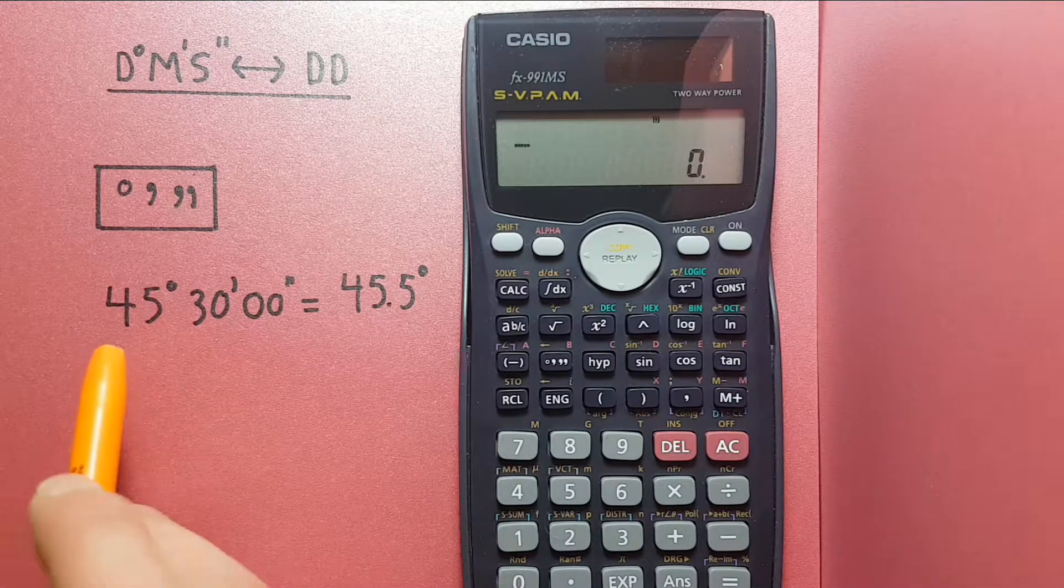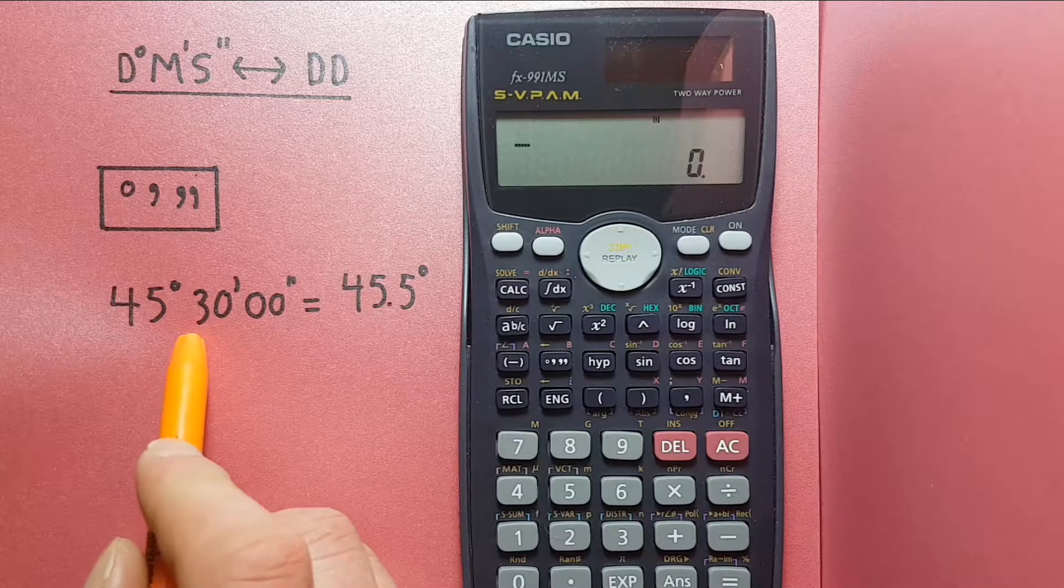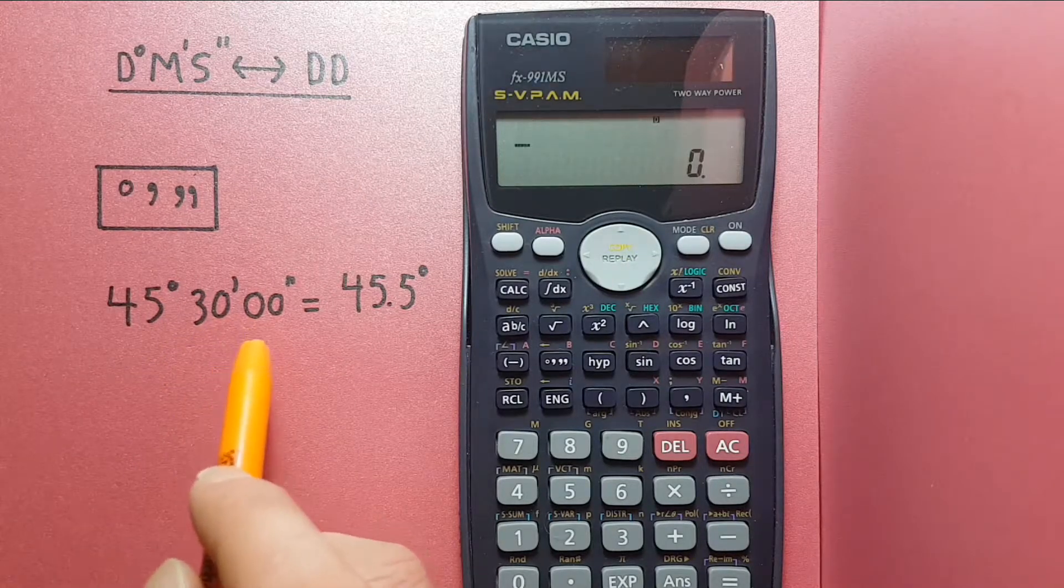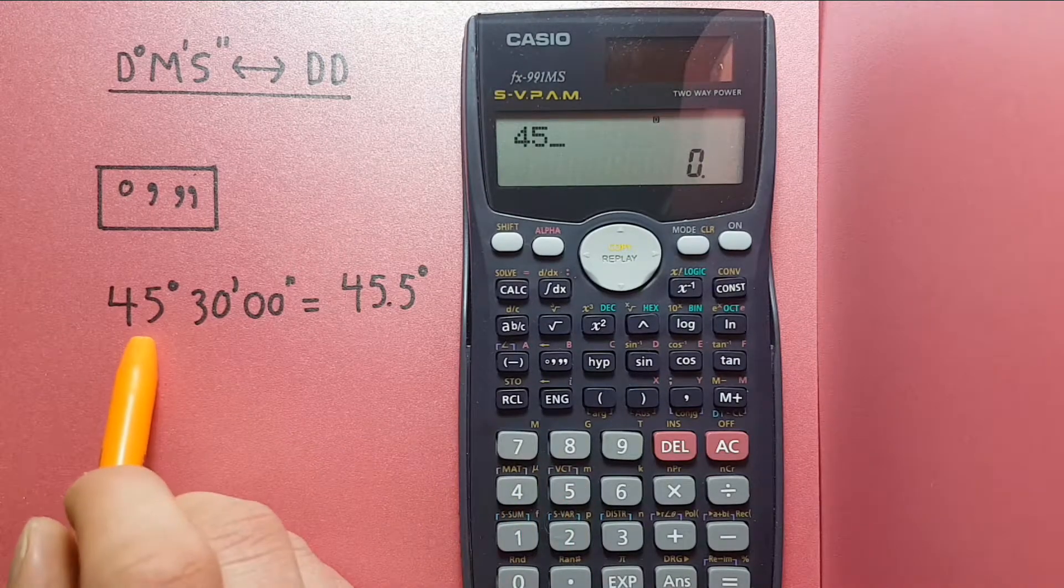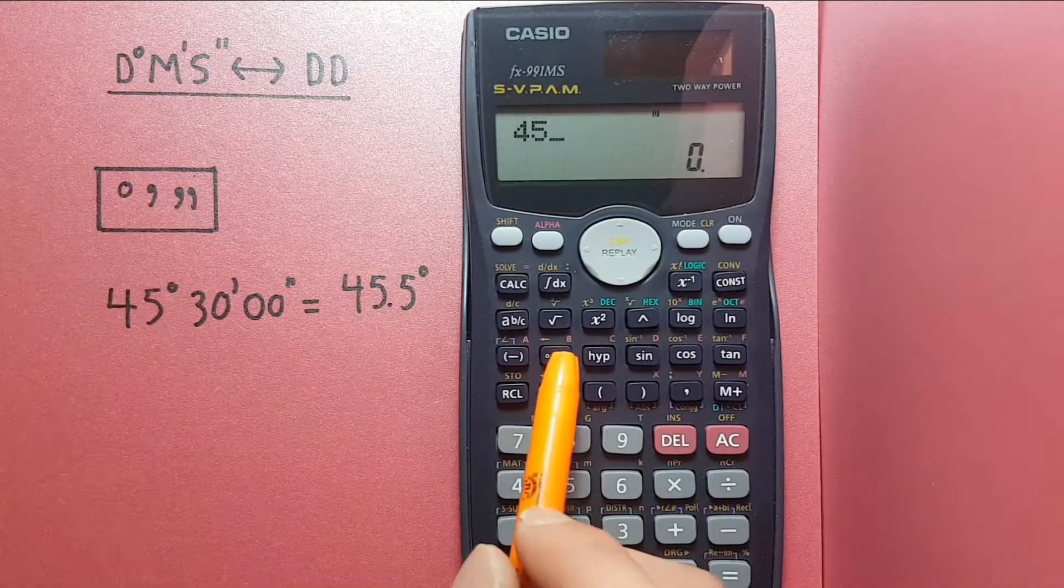Let's say we had 45 degrees and 30 minutes and we wanted to convert this to decimal degrees. We would enter 45 degrees and then press the degree button.